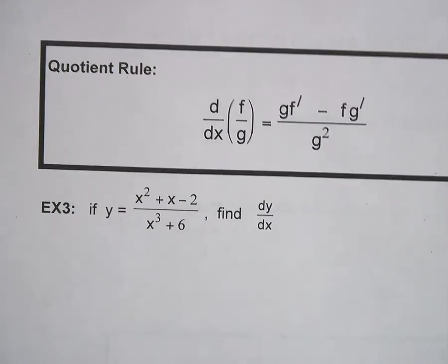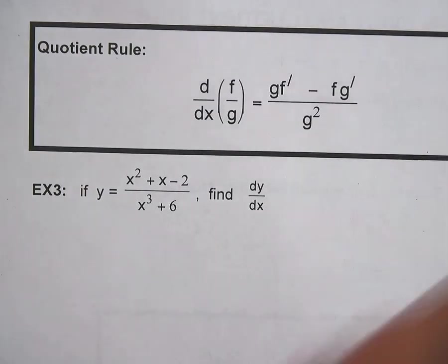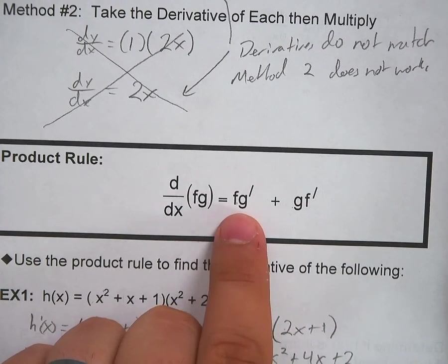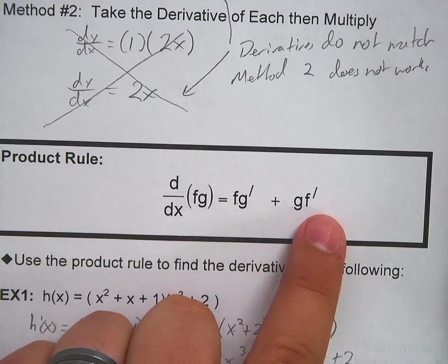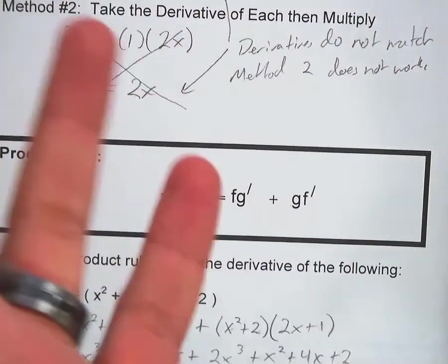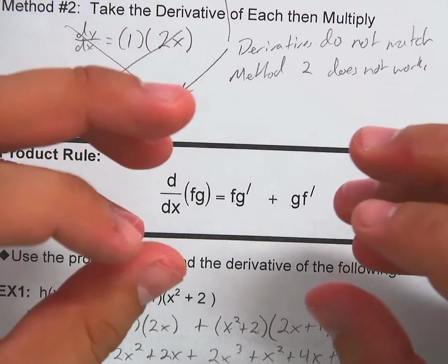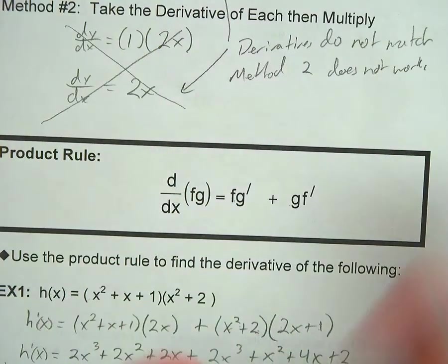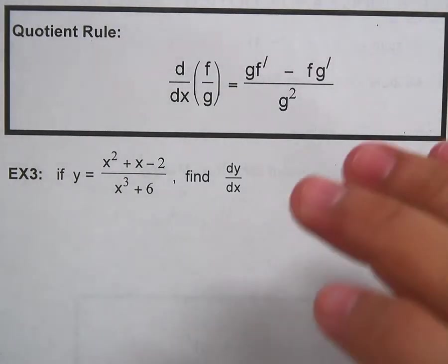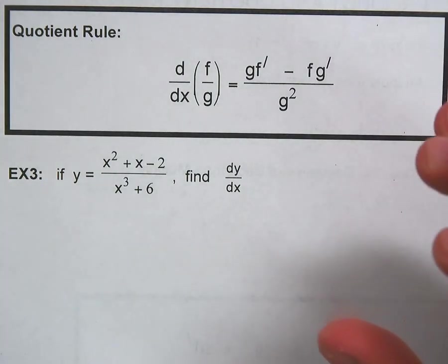So if you've got a product rule, you're probably going to have a quotient rule. The product rule is easy on order because it uses a plus sign — you can swap f and g and it's the same result since multiplication is commutative. But subtraction is not commutative: 3 − 2 is not the same as 2 − 3. So for the quotient rule, getting the order right is extremely important.